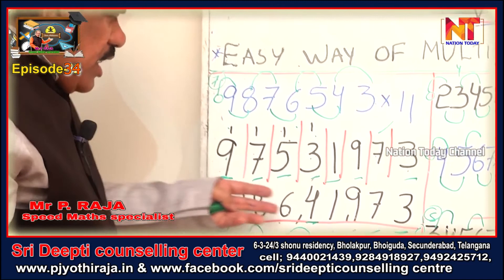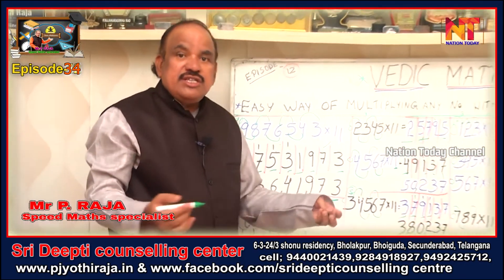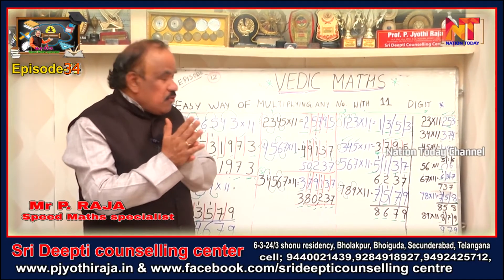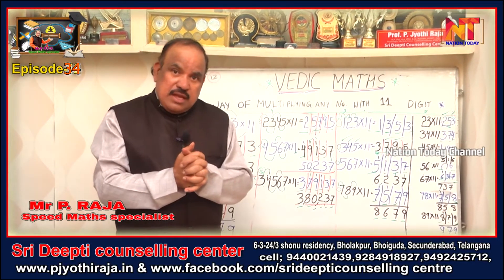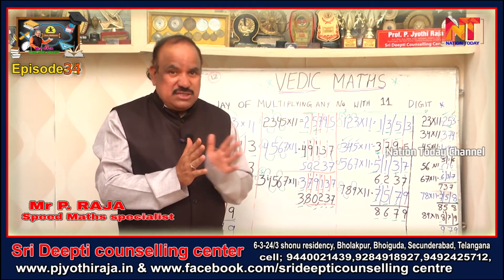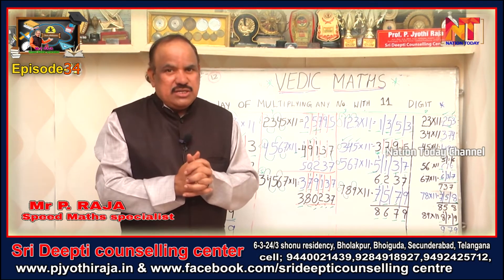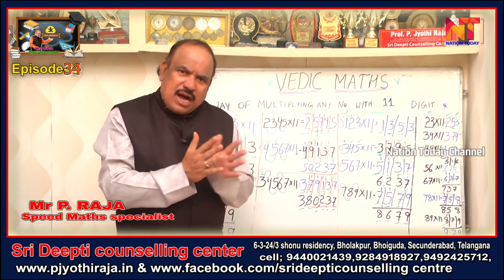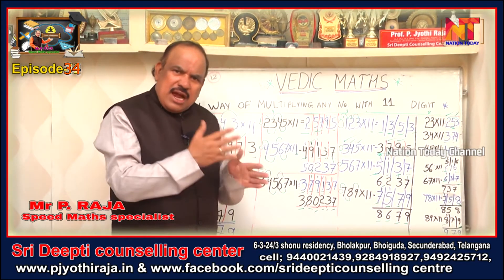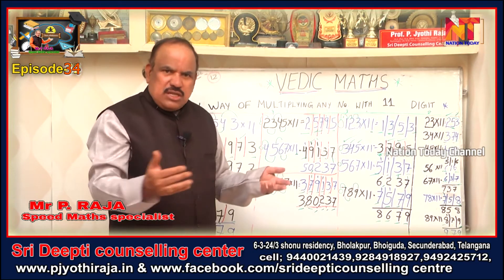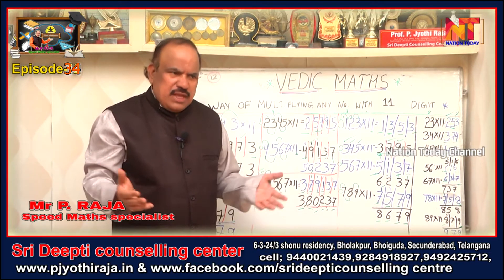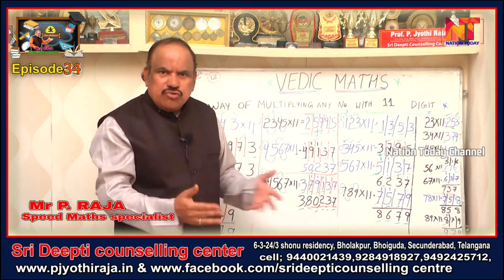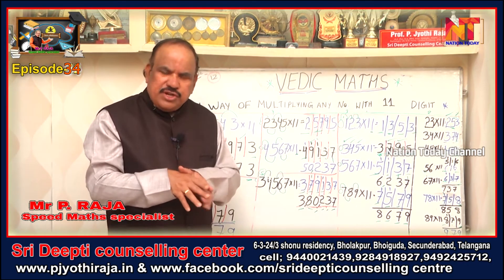Ten crore, eighty-six lakhs, forty-one thousand, nine hundred and seventy-three — instantly, without doing full multiplication. I hope you understood this method. If you have a little confusion, in the short time available I can't teach everything, so ask your father, brother, or whoever is there to watch this with you. I also request parents — during corona time we have free time, so give your children exercises like this.